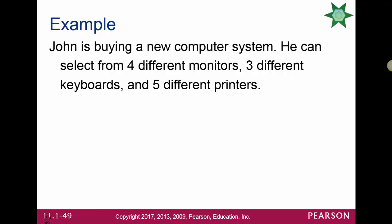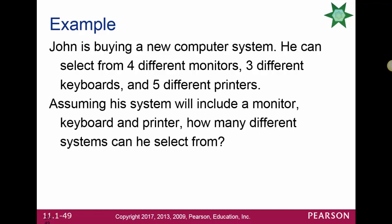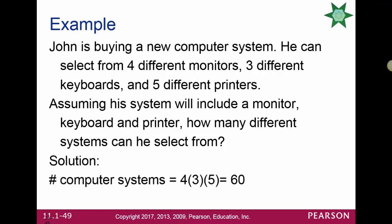Josh is buying a new computer system. He can select from 4 different monitors, 3 different keyboards, and 5 different printers. Assuming his system includes a monitor, a keyboard, and a printer, we use the counting principle and simply multiply: 4 × 3 × 5 = 60 different systems he could build.